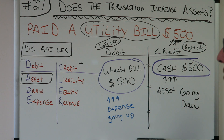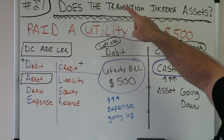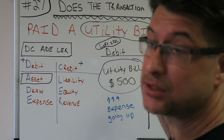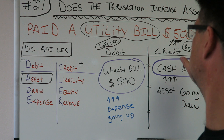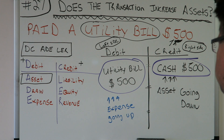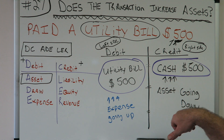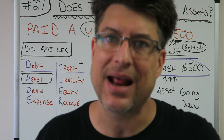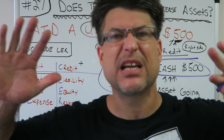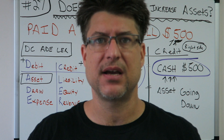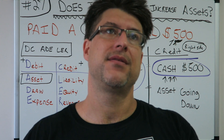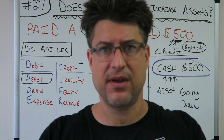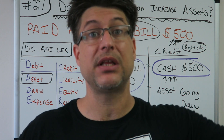What's our journal entry? Debit utility bill $500, credit cash $500. Utility bill is an expense — it is going up because we just paid $500, so it's increasing by $500. Our cash credit side: cash is an asset, since it's on the credit side it's going down. Does the transaction increase assets? Expense — that's not an asset. We have an asset over here, cash, but it's going down. So assets are going down — not gonna happen. Thank you so much for watching. I'm working with a new camera and I really appreciate you watching these.